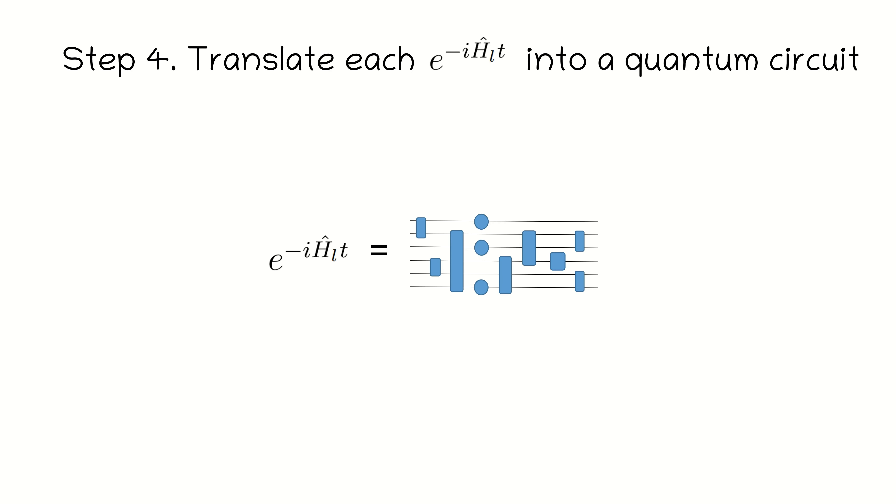Step 4. Translate each part of the total evolution operator into a quantum circuit. Each local term in this case can be simulated exactly. You can learn more about this in the corresponding video.